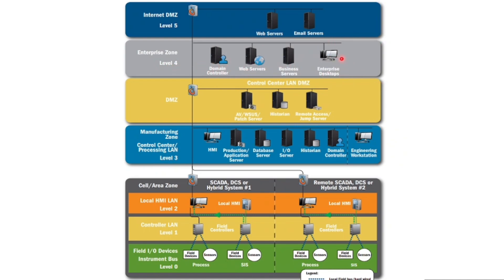We can map what type of servers to place in each level depending on the business use case. These levels are created because each level requires a similar set of cyber security controls. For an HMI zone or local HMI LAN, we can apply application allowlisting, IDS, and antivirus. For a field cabinet, we can do cabinet locking and physical access controls. For field-level devices, we do tagging, asset inventory, and asset management. For the enterprise zone, which is mostly IT-type systems, we can deploy EDR and UEBA.